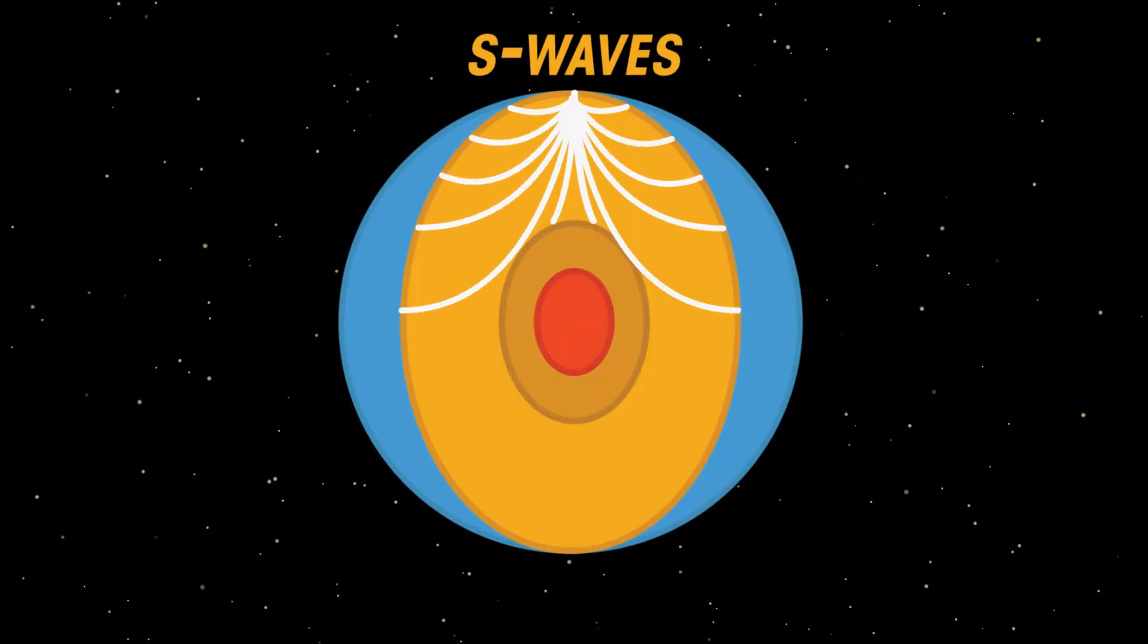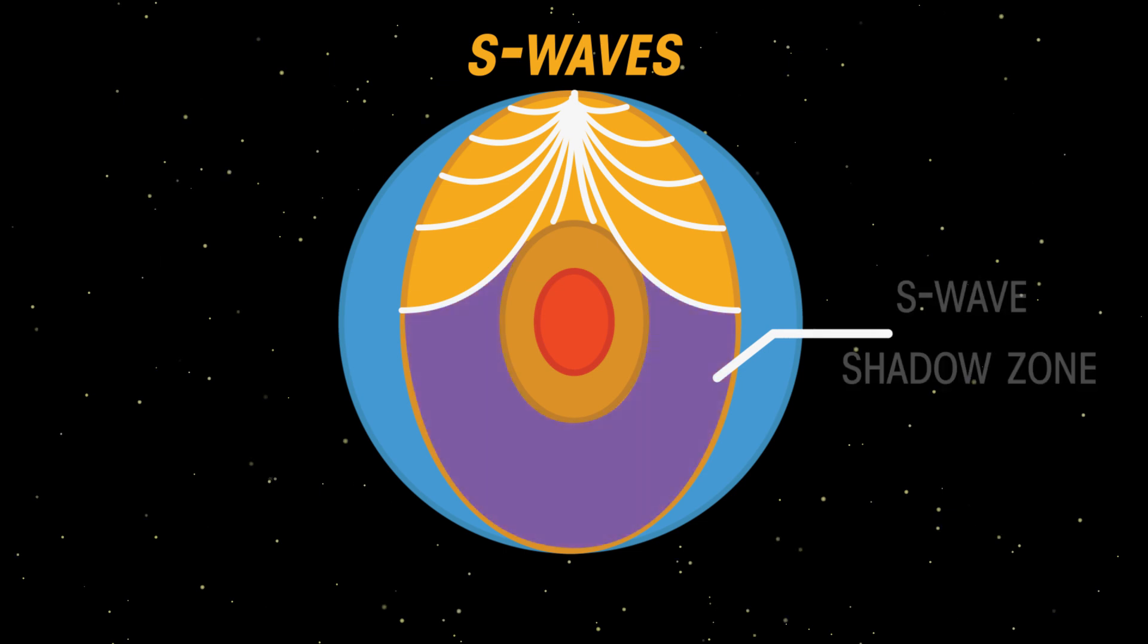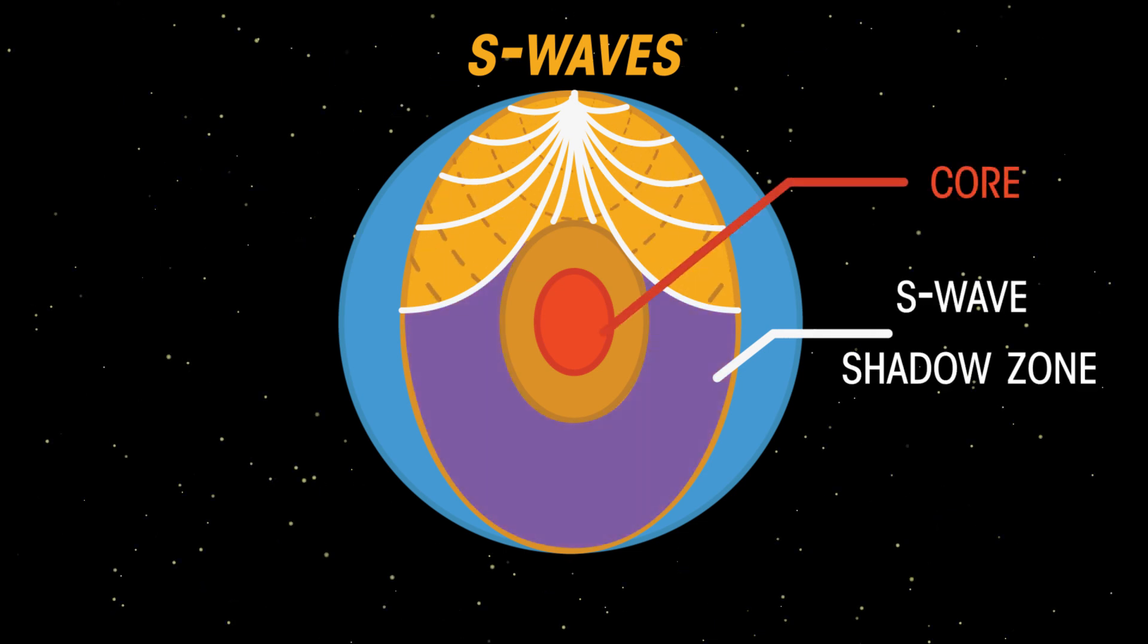S-waves have a much larger shadow zone, suggesting there is a liquid iron structure deep in the earth they cannot travel through.